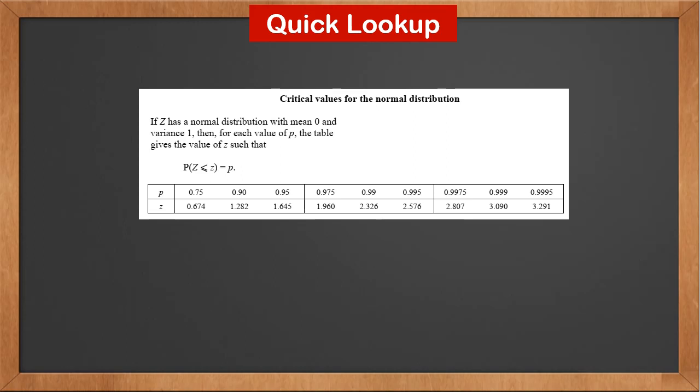Below the z table, there's a section that has 9 values for quick reverse lookup. It lists commonly used probabilities, or phi values, with their corresponding z values. So if P(Z < z) = 0.90, what is z? In this section, we can quickly find the p-value 0.90 and its corresponding z value. Therefore, z is 1.282.